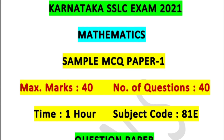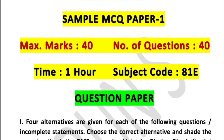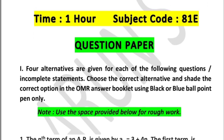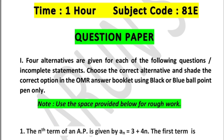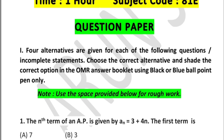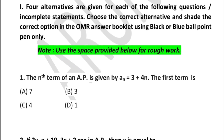Students, while I read out the questions, take a notebook and try to find out the answers for each question — which is direct or which needs a few simple steps. When I post the answers you can verify them. Four alternatives are given for each question or incomplete statement. Choose the correct alternative and shade the correct option in the OMR sheet using black or blue ballpoint only. Use the space provided below for rough work.